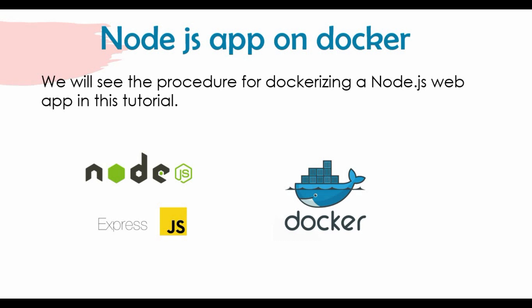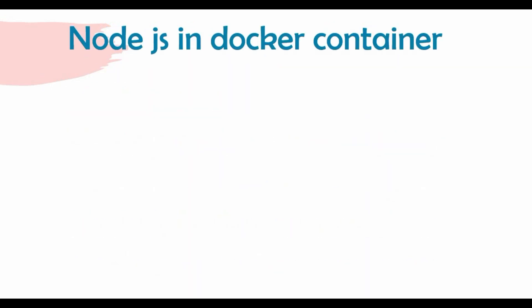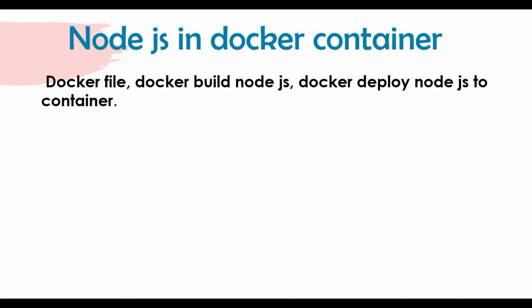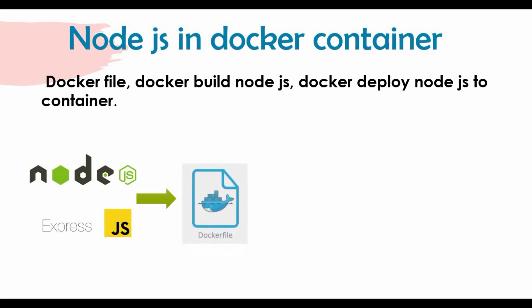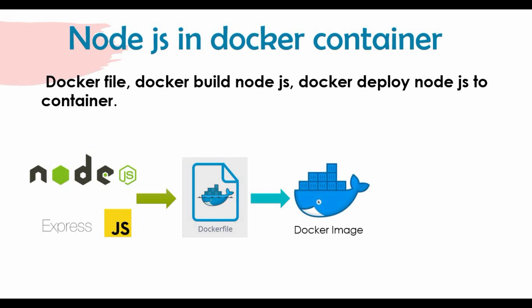When we talk about dockerization, the steps are: we need to have a Dockerfile, we need to build the Docker image, and then we deploy the Docker container. Our base is a Node.js app with Express.js, and then we will write a Dockerfile to copy that code into a Docker image — the image will have the Node.js setup and our packages and files copied into it.